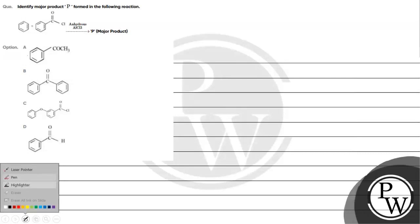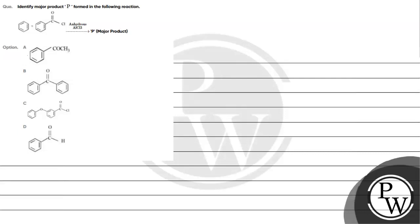Let's read this question. The question says, identify the major product P formed in the following reaction. Let's tell you what is the major product P formed in the following reaction.